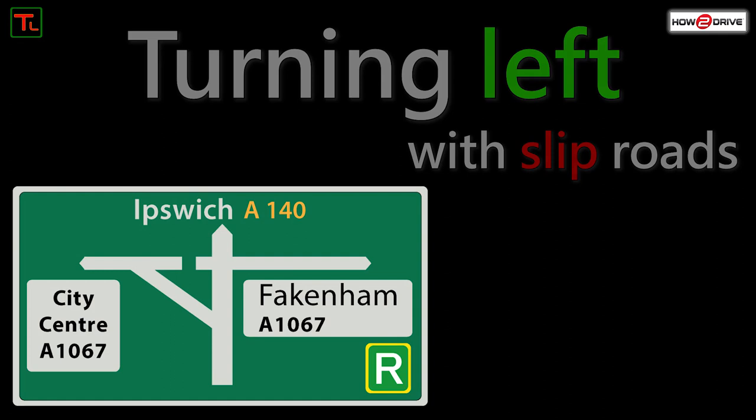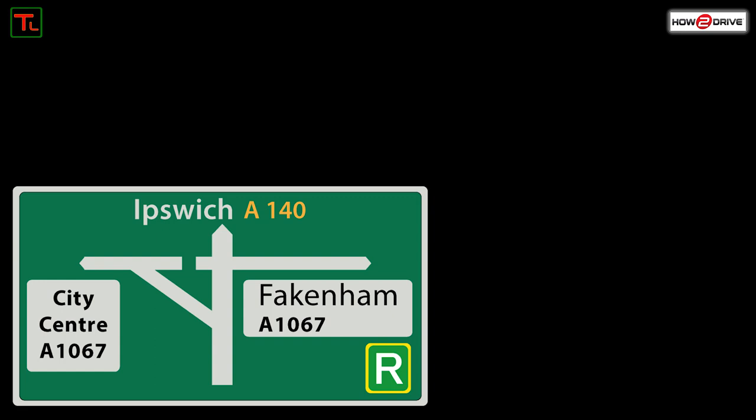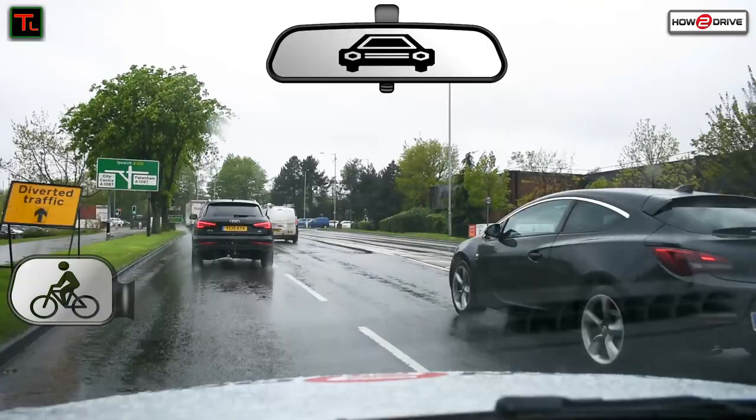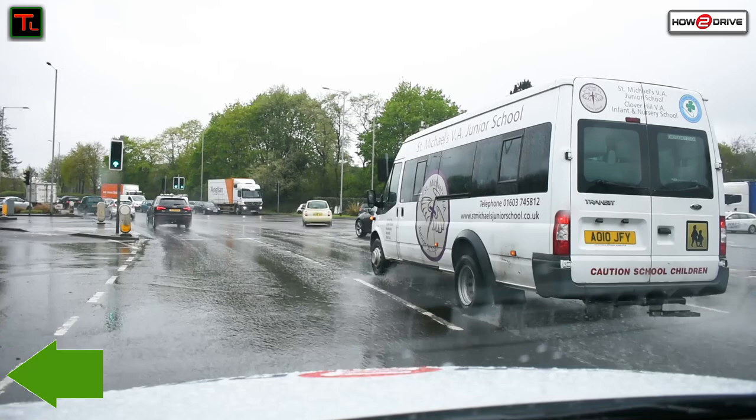We're going to be turning left at the traffic lights and this one's got a slip road, heading towards the city centre. Notice on the sign how we've got that slip road. As we approach we check our mirrors and pop a signal on and enter the slip road. Traffic ahead is on green so they're going to be moving ahead and we have a give way sign, so we're still going to look to the right — it should be clear — and we go.